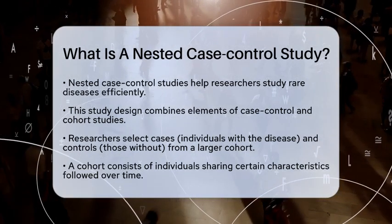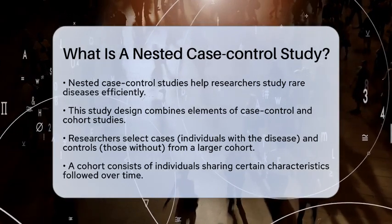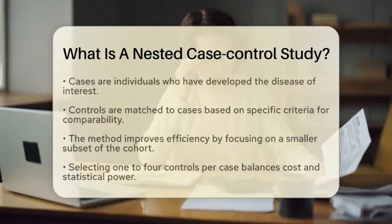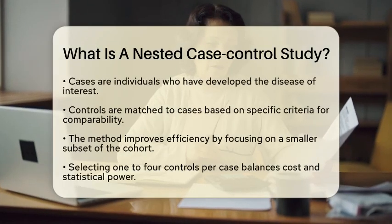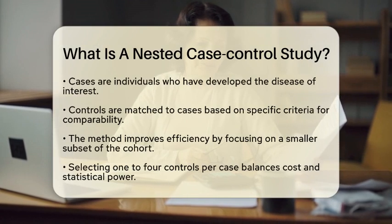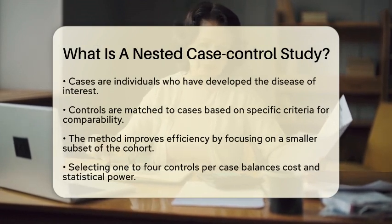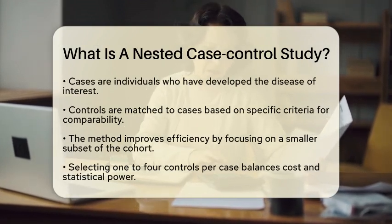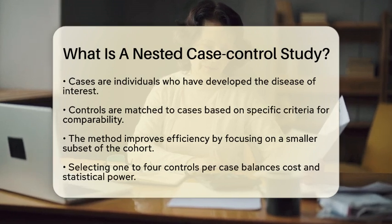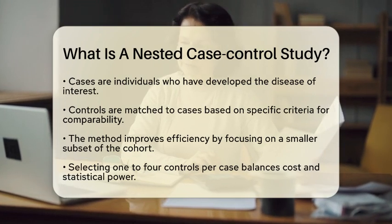Cases are individuals within this cohort who have developed the outcome of interest, like a specific disease. On the other hand, controls are those who have not developed the outcome by the time the case occurred. Researchers typically match controls to cases based on certain criteria to ensure they are comparable.